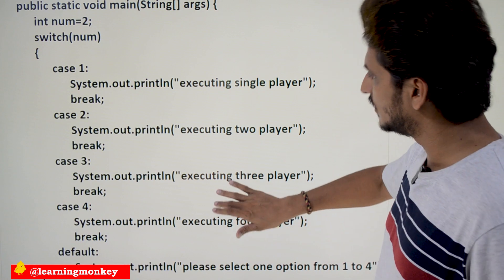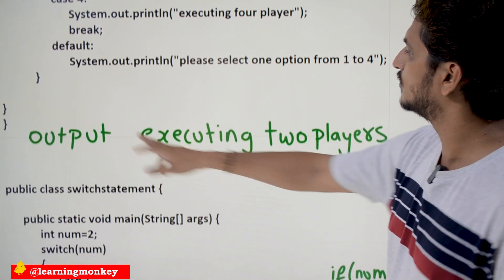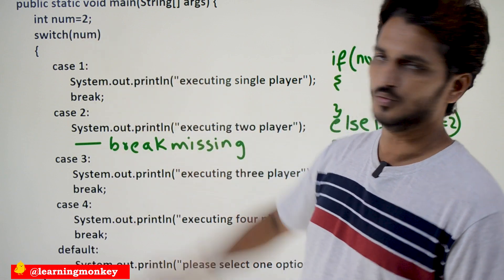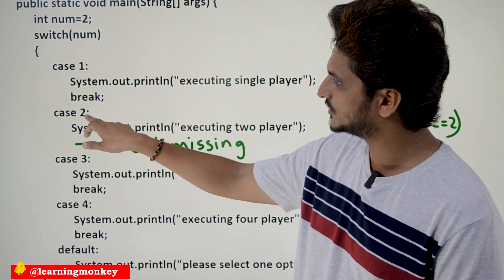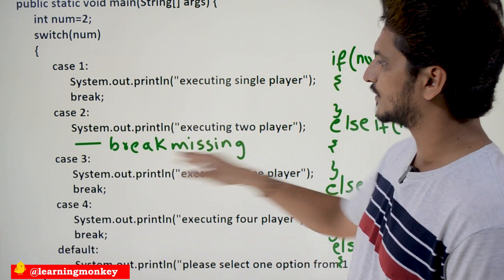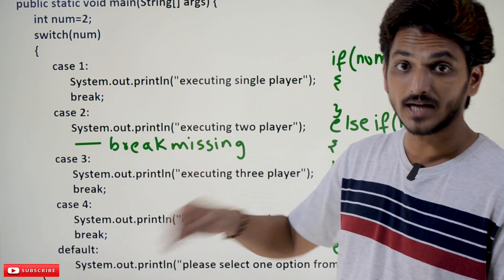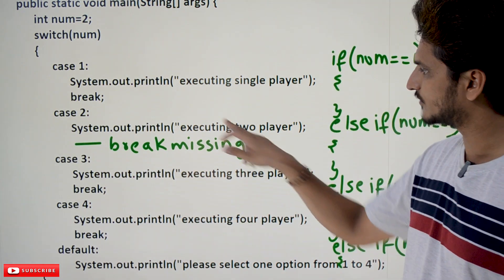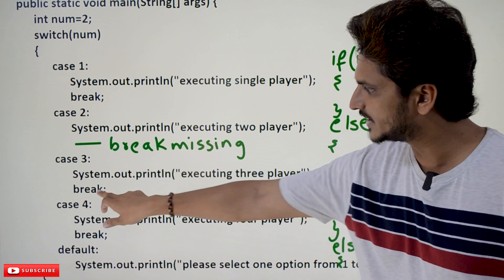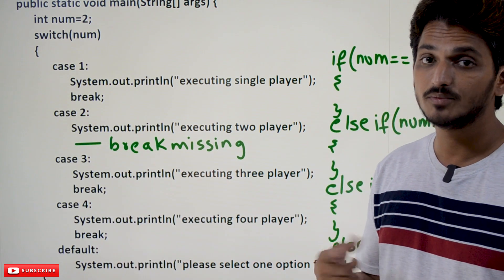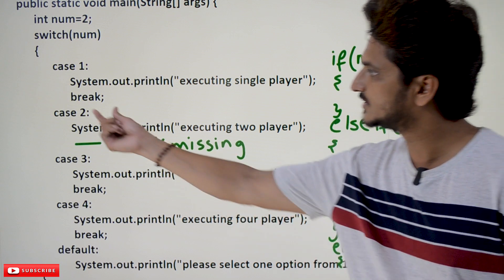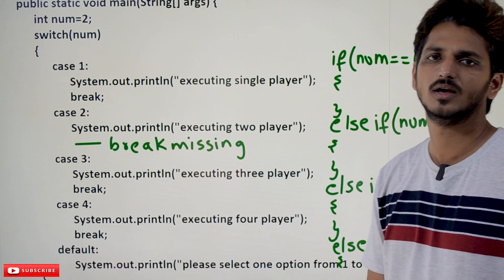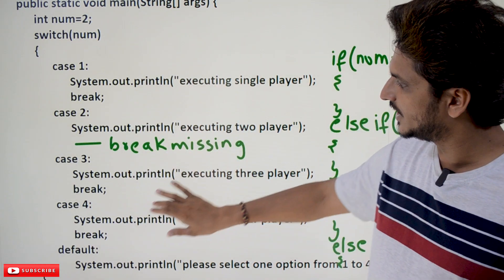One more thing to understand: if you miss the break statement — case two, num is equal to two — it starts executing from case two, System.out.println of 'executing two player'. But the break statement is missing, so it keeps on continuing until it finds the break statement. The next statement is System.out.println of 'executing three player', and after displaying this it finds the break statement. That is how switch statement works with fall-through — it starts executing from the matching case and keeps going until it finds a break.